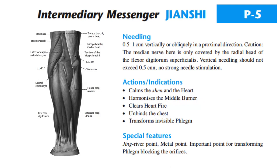Actions and indications: calms the shen and the heart, harmonizes the middle burner, clears heart fire, unbinds chest, transforms invisible phlegm. Special features: Jing River point, metal point, important point for transforming phlegm blocking the orifices.